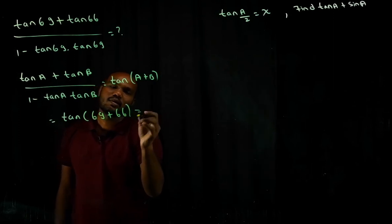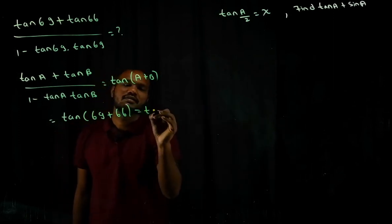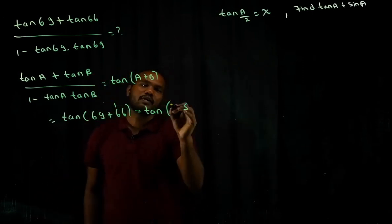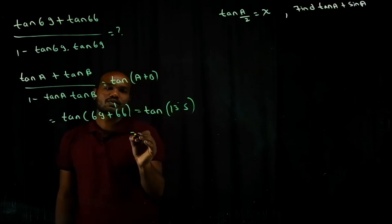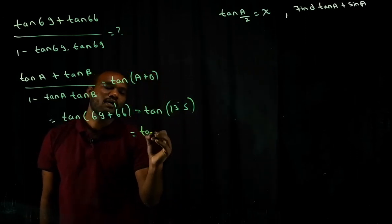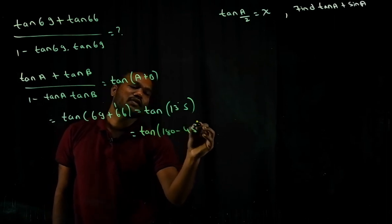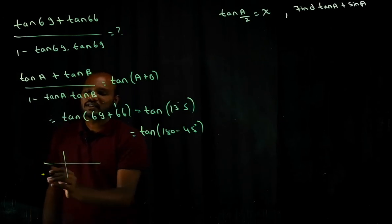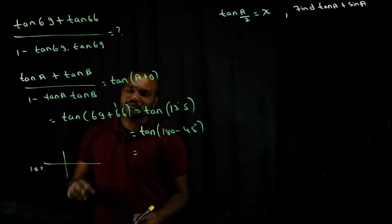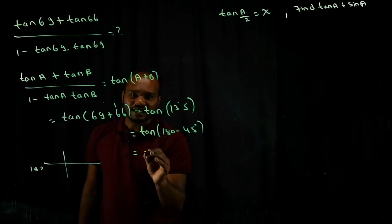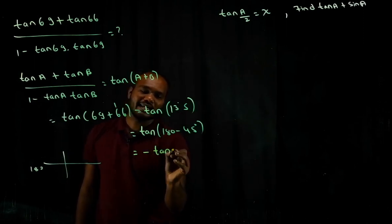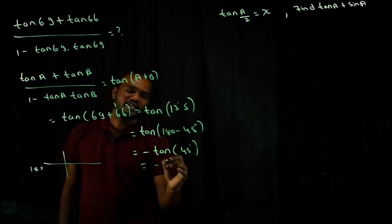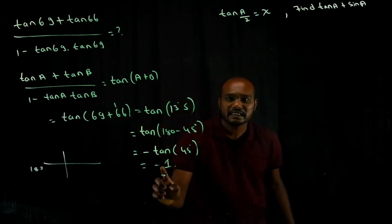Substituting the values: tan(69° + 66°) = tan(135°). We write this as tan(180° − 45°). In the second quadrant tan is negative, and it's a supplementary angle so tan stays as tan. tan 45° = 1, so the final answer is −1.